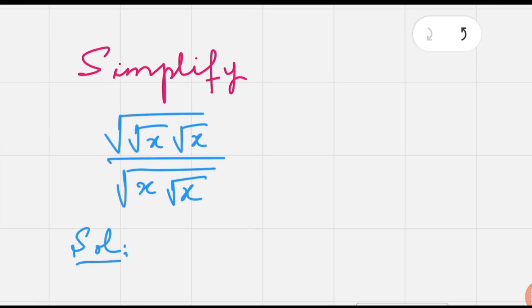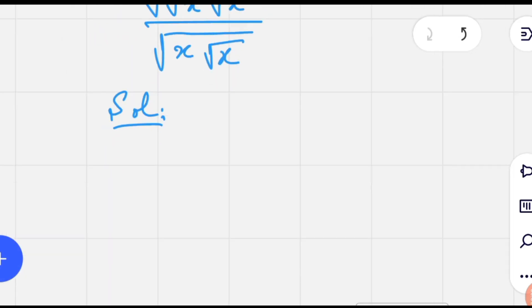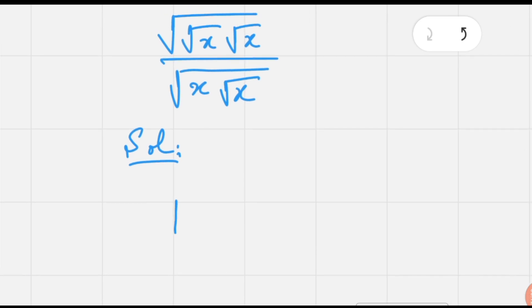Hi everyone, in this video we are going to simplify a fun problem involving radicals such that under the root there is a product of radical x times radical x over under the root x times radical x.